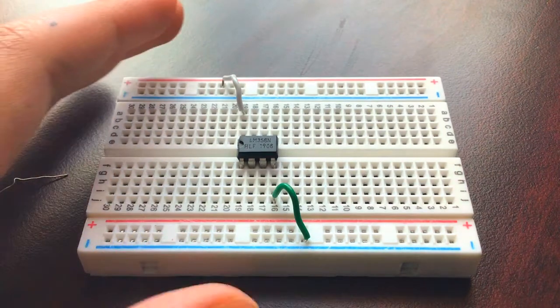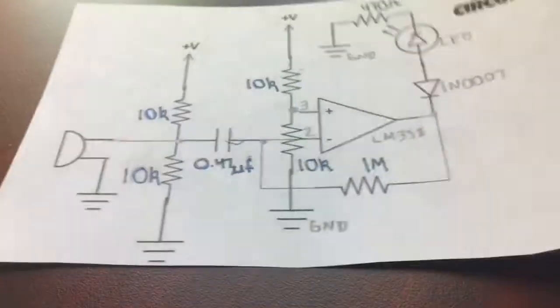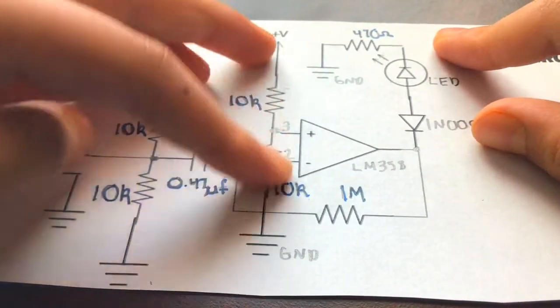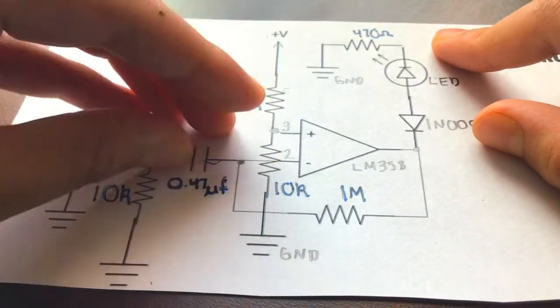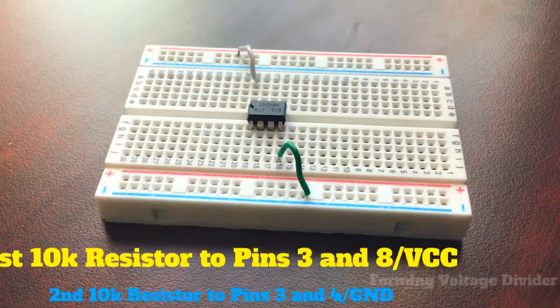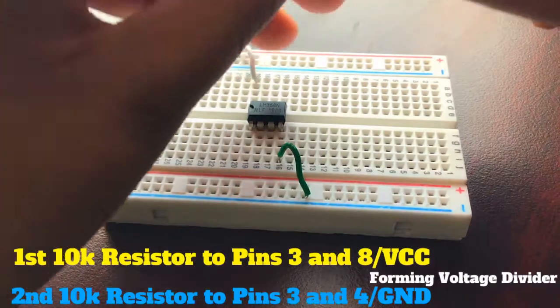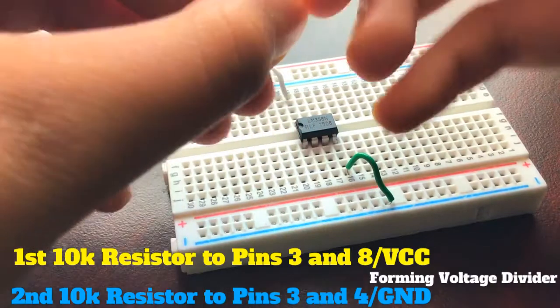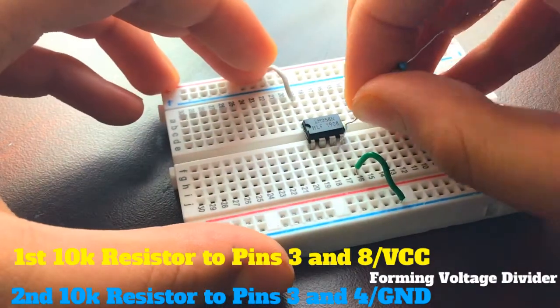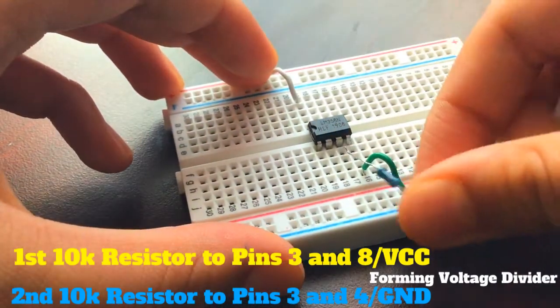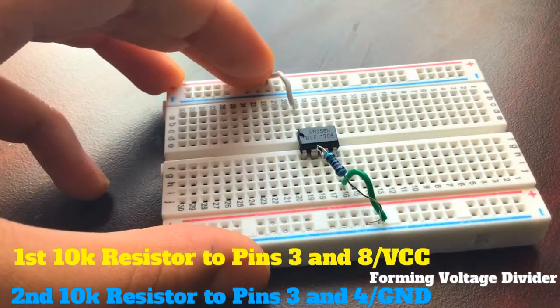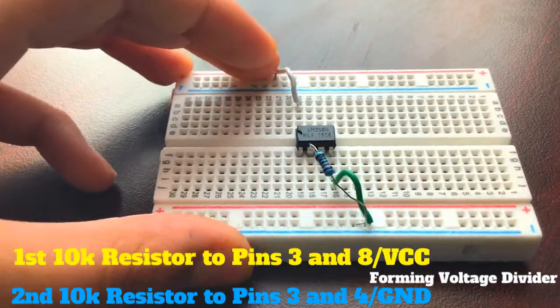After that we want to form a voltage divider with two 10 kilo ohm resistors. Right here at pin 3, or the non-inverting input, you want to create a voltage divider because we want to drop down the voltage right there. We take a 10 kilo ohm resistor and put it on pin 3, put that to the negative rail, and put the other one to the positive rail just like this. Then pin 8 to the positive rail.